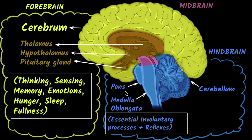What about the pons? Well, we won't worry too much about it. It turns out that it also controls some essential involuntary functions — there's overlap of functions. For example, the pons controls sleep as well, and it also controls your breathing cycle. So we won't worry too much about it.